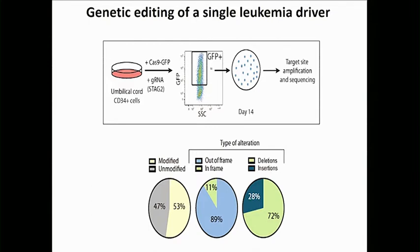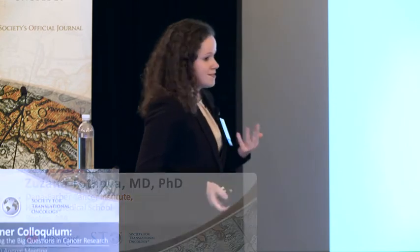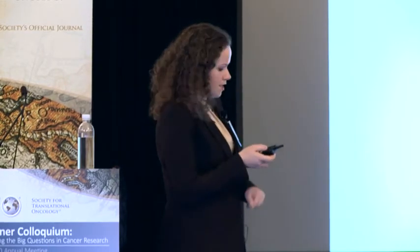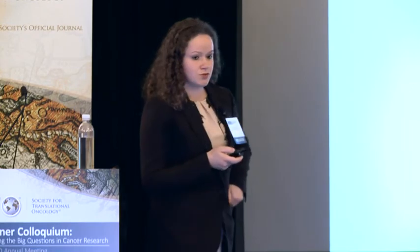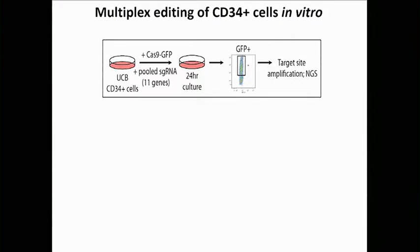Since leukemia and myelodysplastic syndrome are not diseases of a single gene, and the whole goal of this project was to recapitulate the genetic complexity seen in patients, we set out to do this experiment with pools of guide RNAs. We nominated 11 genes for this pool, which are most frequently mutated in myelodysplastic syndrome and are predicted to have loss-of-function mutations. The pool also included a couple of controls with mutations in splicing factors.